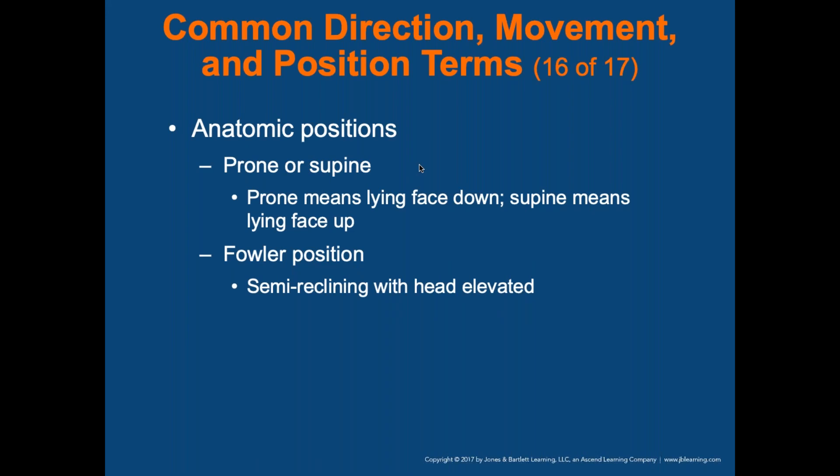Anatomic positions: prone and supine. Supine means lying on your back, face up. Prone means lying on your stomach. The Fowler's position is a semi-reclining with head elevated position. For stroke patients, we want a semi-reclined head position at 30 degrees so we're not putting extra pressure on the head in case of a hemorrhagic stroke. When we get into the neuro-assessment lecture, we'll talk more about positioning.